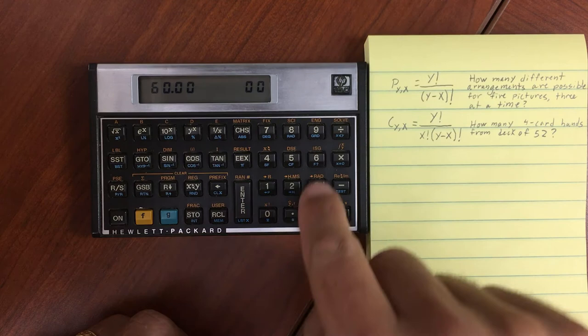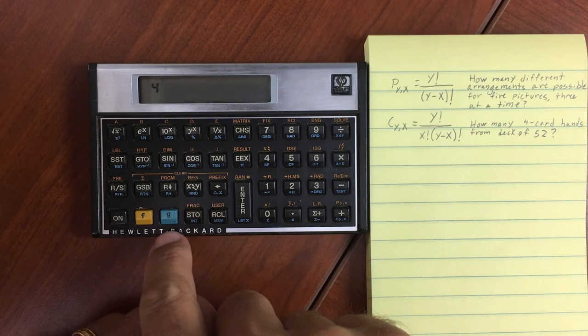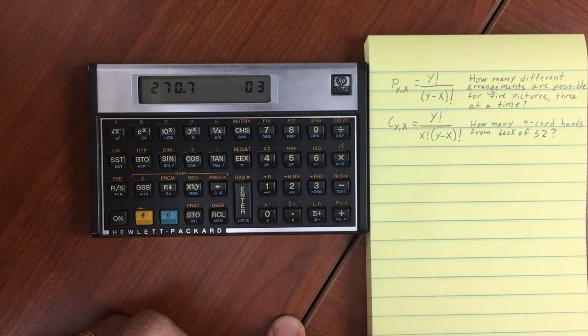We're going to enter in 52. Enter. We're selecting four for our number of cards per hand, and then hit the blue shift, and then combinations.